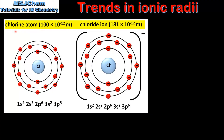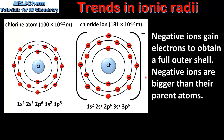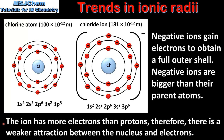Next we look at the difference in size between an atom and its negative ion. The example is the chlorine atom and the chloride ion. If we compare the atomic radius and the ionic radius we can see that the chloride ion is larger than the chlorine atom. By looking at the electron configuration we can see that the chloride ion has one more electron than the chlorine atom. Negative ions gain electrons to obtain a full outer shell. The second point is that negative ions are bigger than their parent atoms, and the reason for this is that the ion has more electrons than protons, therefore there is a weaker attraction between the nucleus and the electrons.